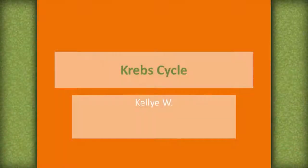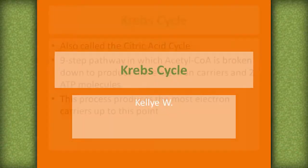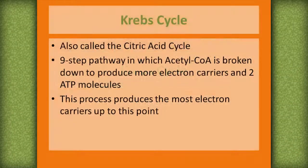My name is Kelly. I'm from the Center of Academic Achievement. We're talking about the Krebs cycle. The Krebs cycle is also known as the citric acid cycle. It's a nine-step pathway in which acetyl-CoA is broken down to produce more electron carriers and two ATP molecules.